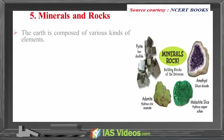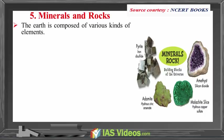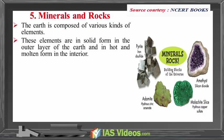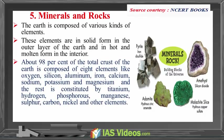Minerals and Rocks. The earth is composed of various kinds of elements. These elements are in solid form in the outer layer of the earth and in hot and molten form in the interior. About 98% of the total crust of the earth is composed of 8 elements: oxygen, silicon, aluminum, iron, calcium, sodium, potassium and magnesium. The rest is constituted by titanium, hydrogen, phosphorus, manganese, sulfur, carbon, nickel and other elements.